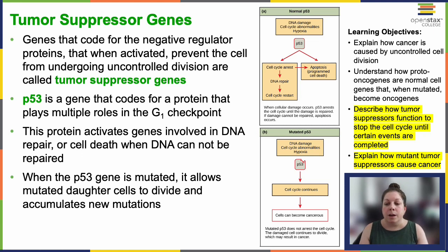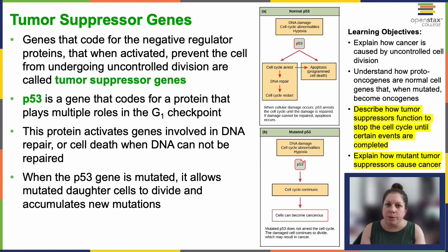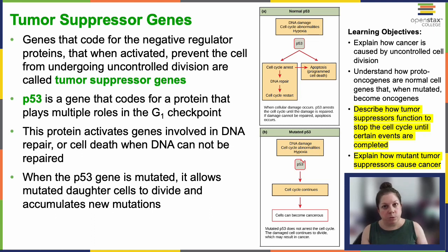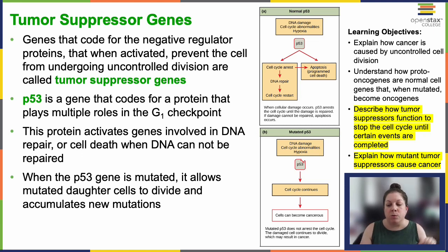Some notable tumor suppressor proteins include retinoblastoma protein RB1, P53, and P21. Collectively they function to block cell cycle progression until specific conditions are met. The proteins these genes code for are responsible for making sure that all those little checkmarks happen. Cells with mutated negative regulators may be unable to stop the cell cycle from carrying forward. Mutations in P53 genes are found in over half of human tumor cells. This isn't surprising because P53 has a really important role at the G1 checkpoint — it activates genes that pause the cell cycle for DNA repair, and it initiates the DNA repair process or plays a role in activating the proteins that trigger cell death, also called apoptosis.